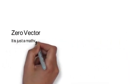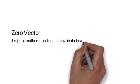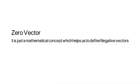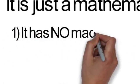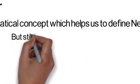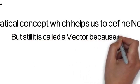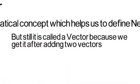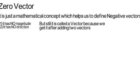The concept of zero vector. It is just a mathematical concept which helps us to define negative vectors. It has no magnitude, it has no direction, but still it is called a vector because we get it after adding two vectors.